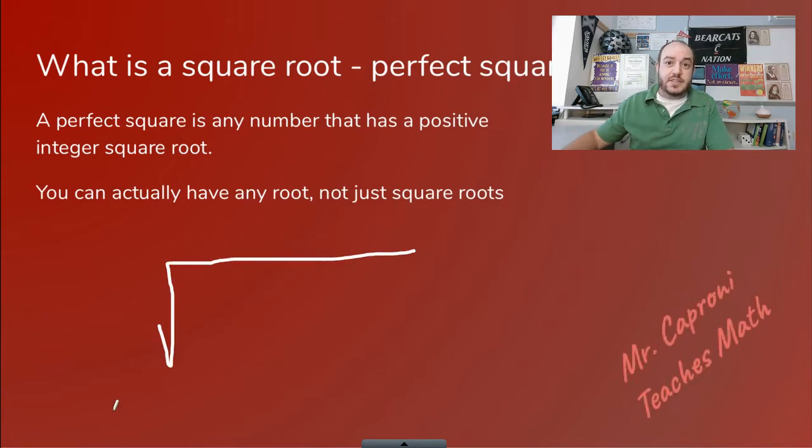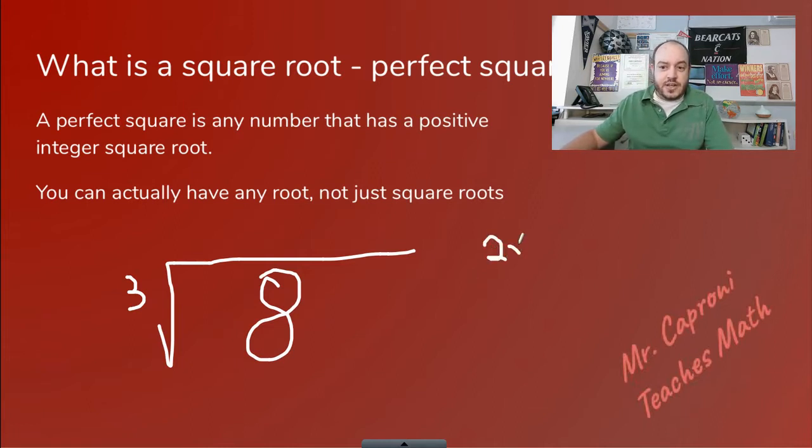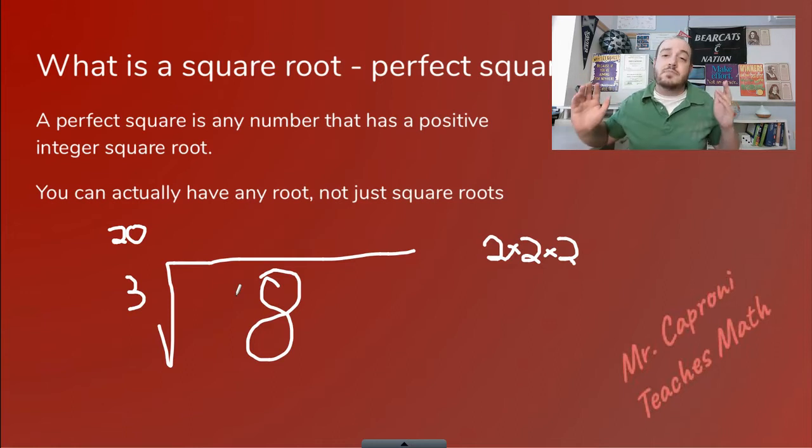Moving right along, we can actually see that square roots are not the only types of roots out there. Now, I know when you see a symbol like this, it means square root, but sometimes there's actually another number right here. So say, for example, if you have a little 3 right here, that actually means that you're going to take a cube root of the number underneath it. So in this case, what is the cube root of 8 and what does that mean? It means what number multiplied by itself 3 times gives you 8. 2 times 2 gives us 4 times another 2 would give us 8. So the cube root of 8 is actually just 2 because that's the number that when multiplied by itself 3 times gives you 8.